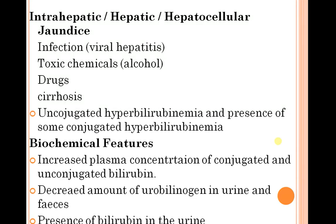In hepatocellular jaundice, causes include viral hepatitis, toxic chemicals, drugs, and cirrhosis. Biochemical features include increased conjugated and unconjugated hyperbilirubinemia, increased plasma concentration of conjugated and unconjugated bilirubin, decreased urobilinogen in urine and feces, and presence of bilirubin in urine.